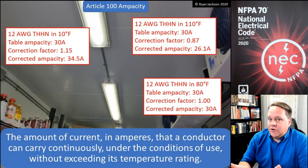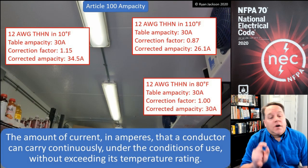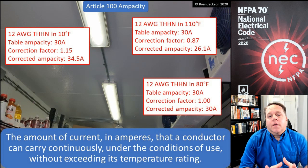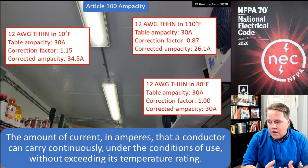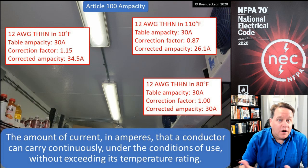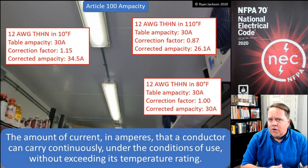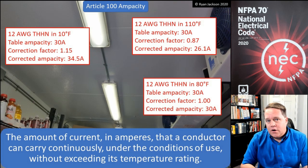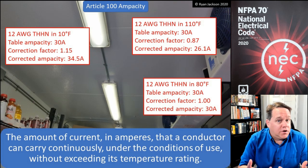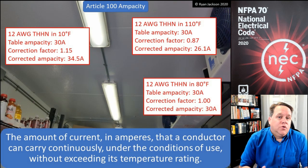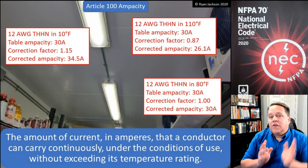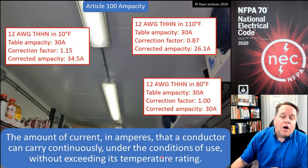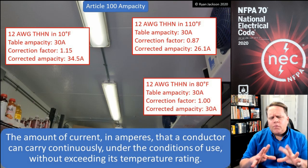Ampacity is measured in amps. That a conductor can carry continuously — so forever. There's not a three-hour limitation. If I have an ampacity of 30 amps or 100 amps, that means I can carry 30 amps on that wire forever. It's not how much current it can carry for three hours or two hours or ten — it's forever. So if it says 30 amps, that means you can put 30 amps on it all day long.